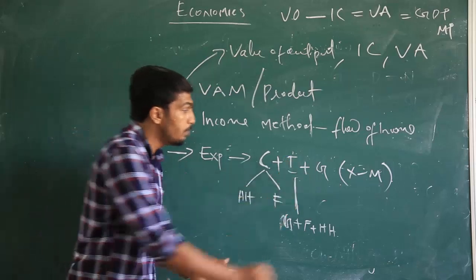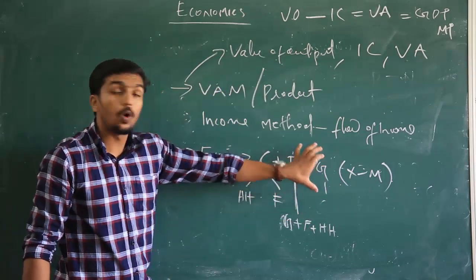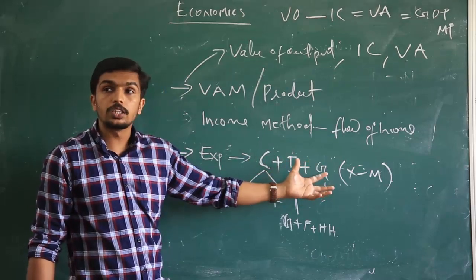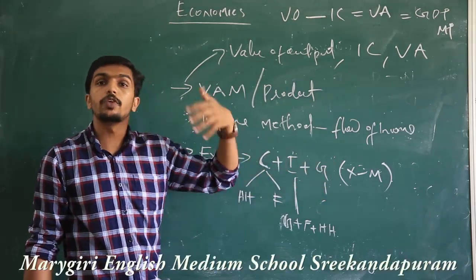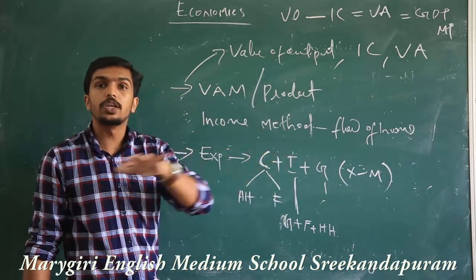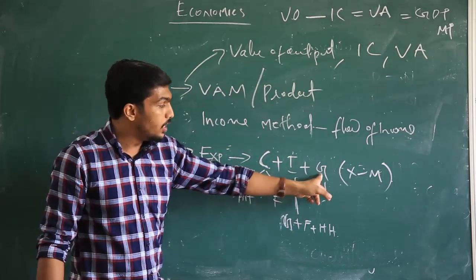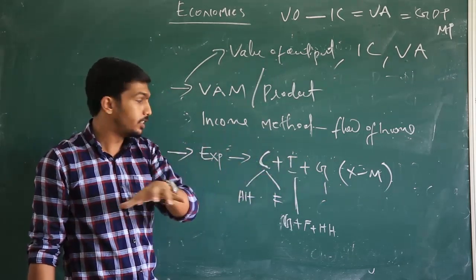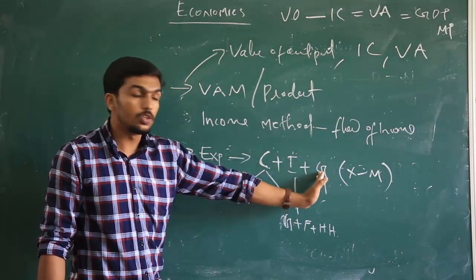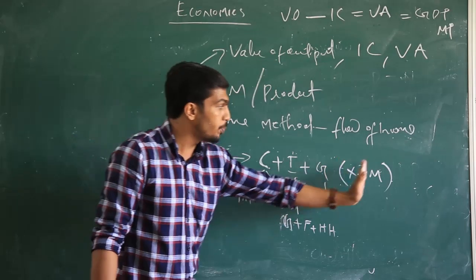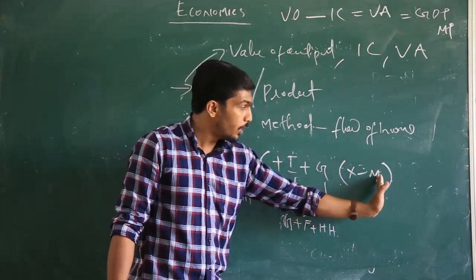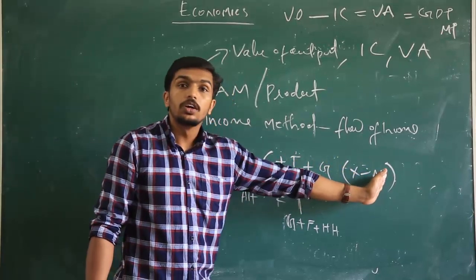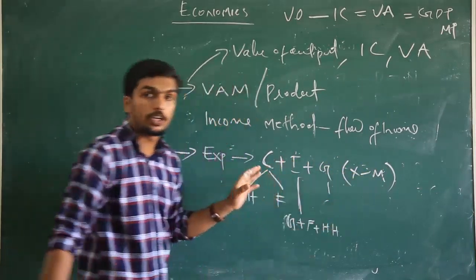G means government consumption expenditure. Government acts sometimes like a consumer, sometimes like a producer, and spends money on public welfare, social welfare, government defense, and many other activities. G is considered as government consumption expenditure. X minus M is called the net export — export minus import gives the net export value, which represents the return from foreign trade activities. This is the four-sector model economy definition using C, I, G, and X minus M.